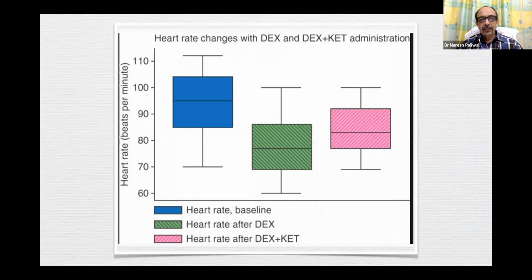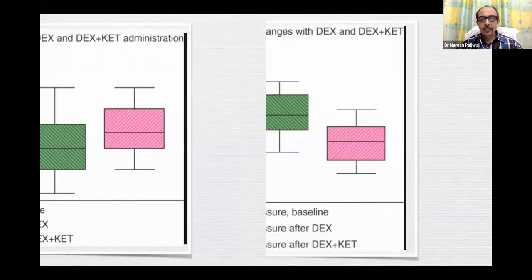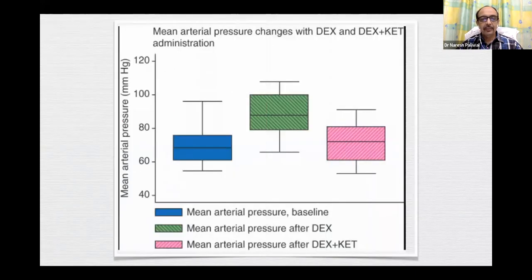This chart shows heart rate changes with dexmed and dexket administration. With dexmed alone there can be initial bradycardia, but with dexket the heart rate is usually well maintained. Similarly for mean arterial pressure — with dexmed alone, there can be a biphasic response of initial hypertension followed by hypotension — but with dexket in proper combination, a maintained mean arterial pressure can be achieved.